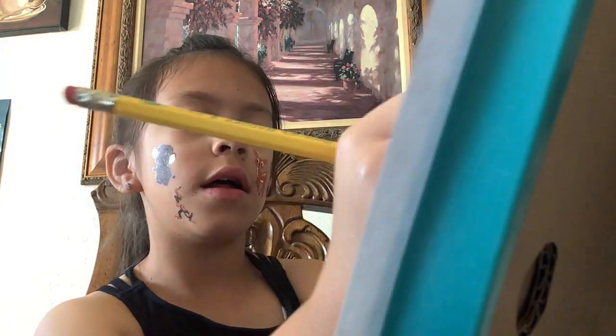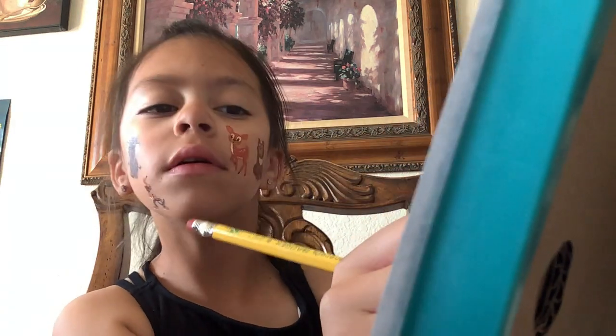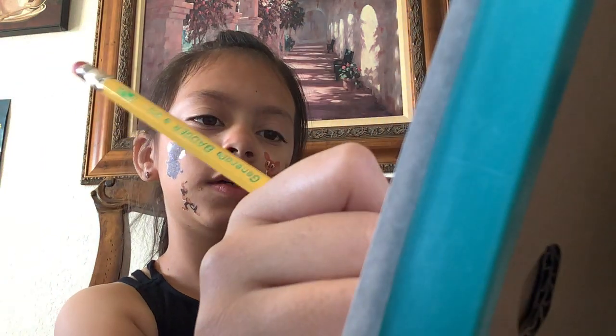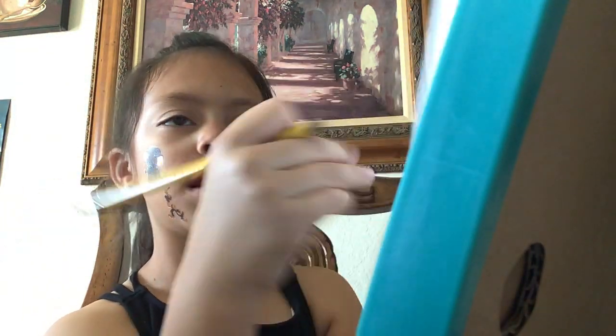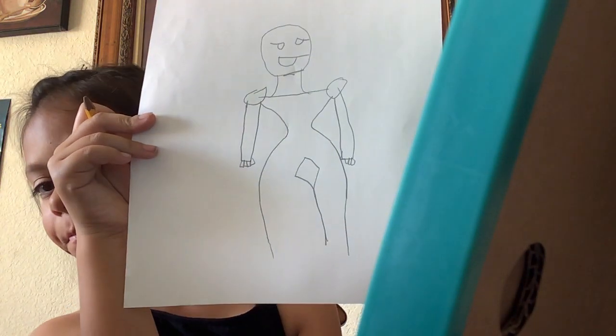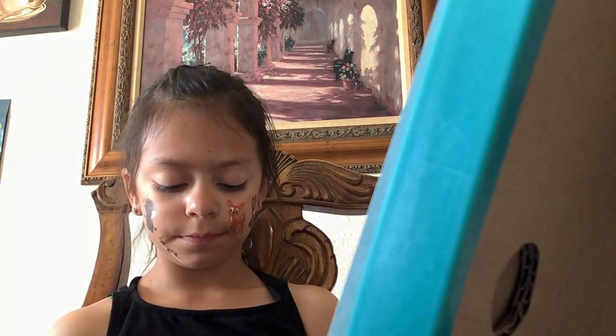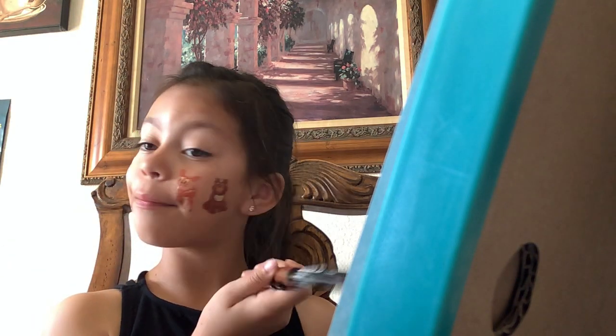And then, you're going to draw a line down to that part. And then, now we color. What I would like to use first, just Posca markers. For the hair, brown.